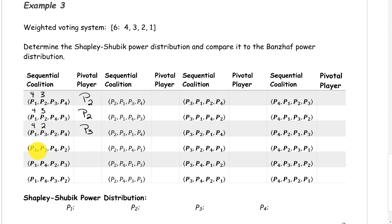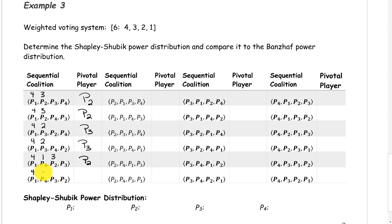The sequential coalition with players 1, 3, 4, and 2: Player 1 has a weight of 4. Player 3 has a weight of 2, and now we've met the quota, so player 3 is our pivotal player. The sequential coalition with players 1, 4, 2, and 3: Player 1 has a weight of 4. Player 4 has a weight of 1. We have not reached quota, so player 2 is our pivotal player. Next, the sequential coalition with players 1, 4, 3, and 2: Player 1 has a weight of 4. Player 4 has a weight of 1. We have not reached quota, so we add in player 3 with their weight of 2. Now we have a total of 7, which meets quota, and so player 3 is pivotal.